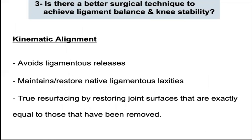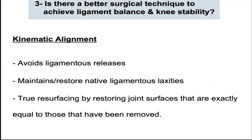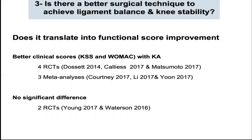In summary, kinematic alignment avoids ligament release and maintains native ligament laxity. It is true resurfacing by restoring joint surfaces that are exactly equal to those that have been removed. Most importantly, there is proof that these benefits translate to improved clinical outcomes — significantly better patient-reported outcome measures were found in four randomized trials, and equal results were found in another two trials.